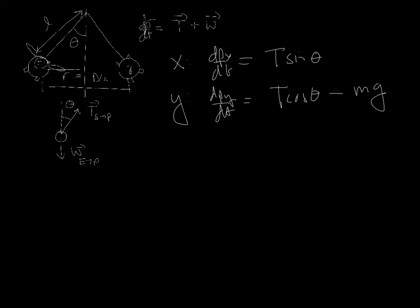Now, in the y direction, there's nothing happening. The pig is not going up or down. It's not changing its y component of momentum. So I can replace this with a zero. In other words, these add up to zero.